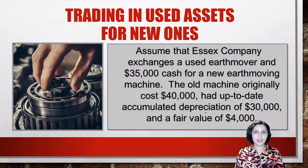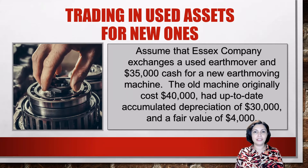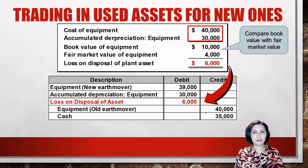Let's look at the next example. Asset Company exchanges a used earthmover and $35,000 cash for a new earthmover. The old earthmover given up has a historical cost of $40,000, accumulated depreciation to the date of exchange of $30,000, and a fair value of $4,000. Because there were no cash proceeds from the disposal, we determine the gain or loss by comparing the asset's book value to its fair market value. The earthmover has a book value of $10,000 and a fair market value of $4,000, so we have a $6,000 loss on the disposal.